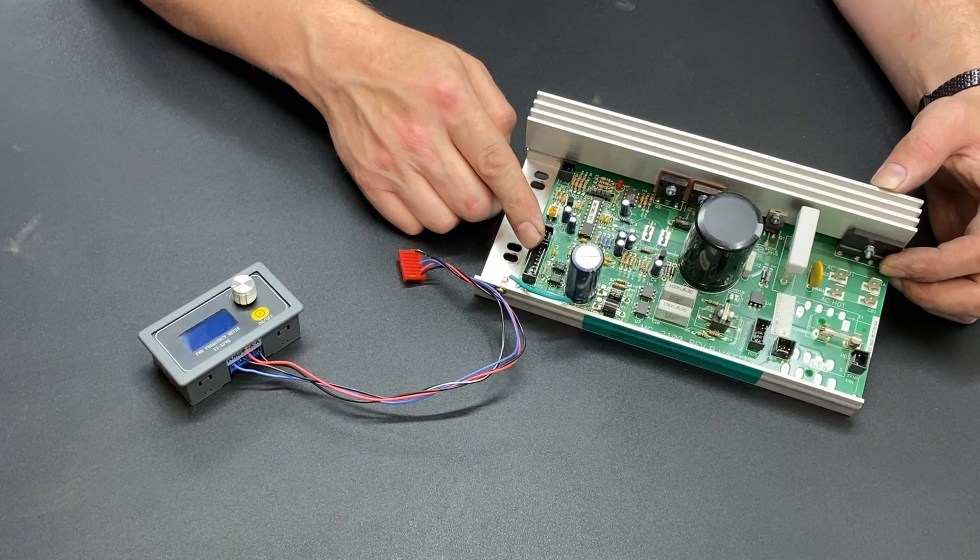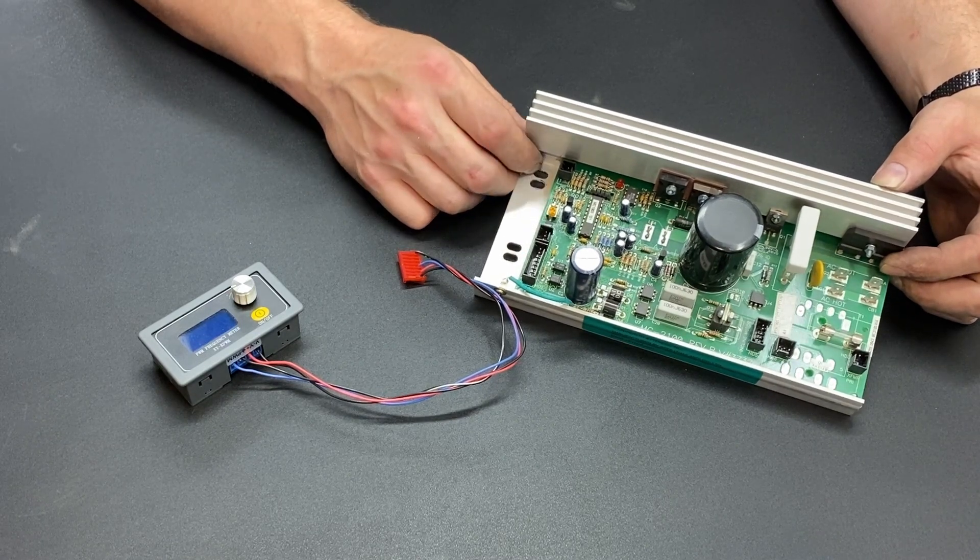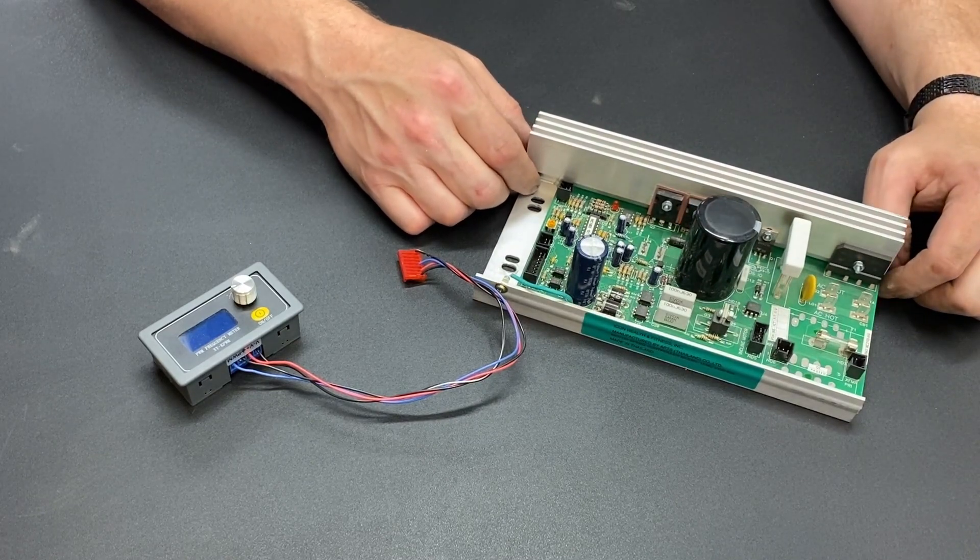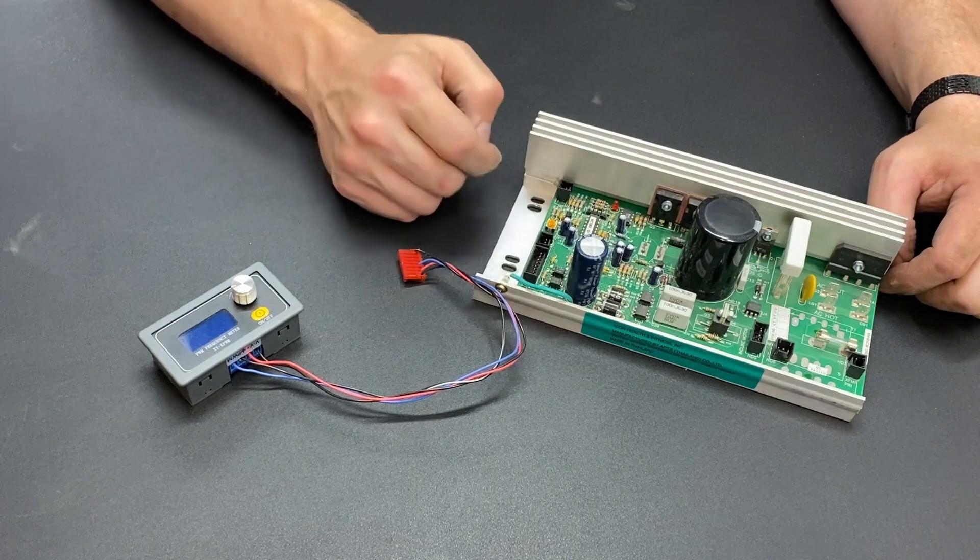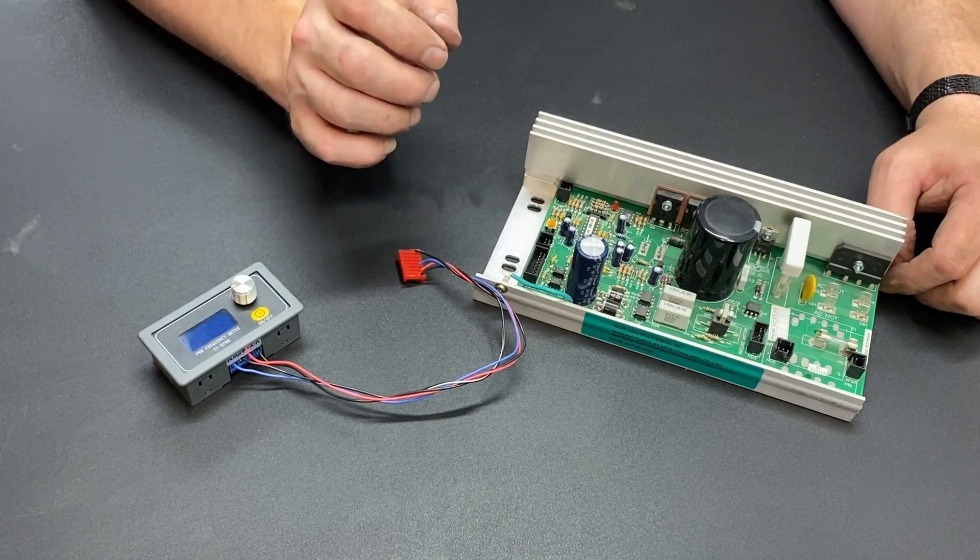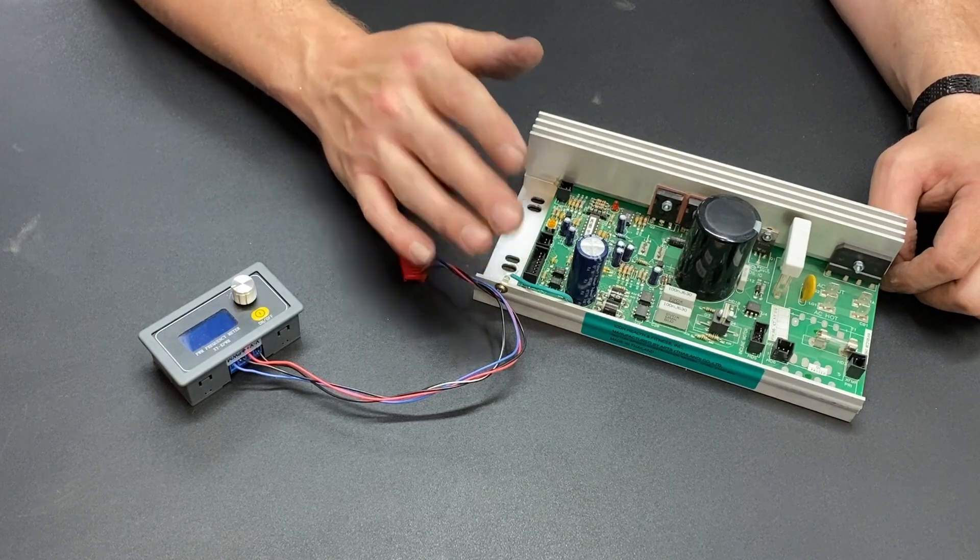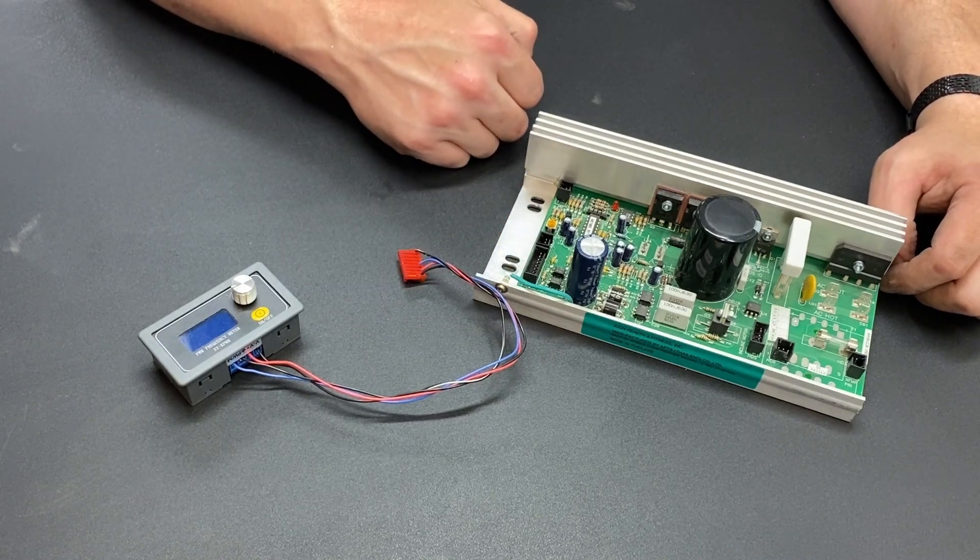So you've got 120 volts coming in from the wall, it's then with the bridge rectifier being converted to DC, and then the other circuits in this board are causing that power to turn on and off at a very specific rate.